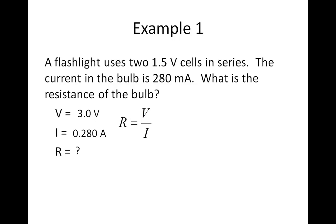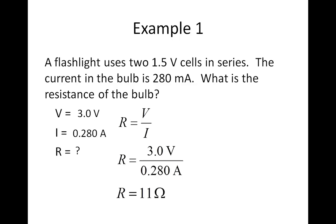Step one: write down the formula R equals V over I. I do not need to rearrange this formula. Step two: plug in the data — V equals 3.0 volts, I is 0.280 amps — then calculate the answer. This gives about 10.7 ohms, but I'll round it to 11 ohms, as there are only two significant digits given in the problem for voltage.